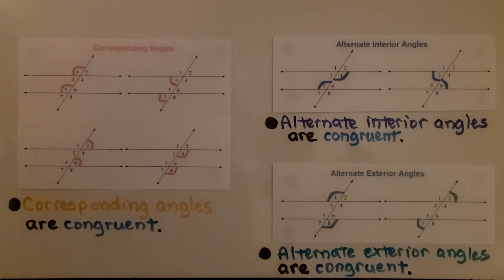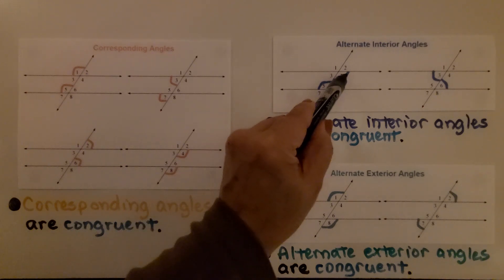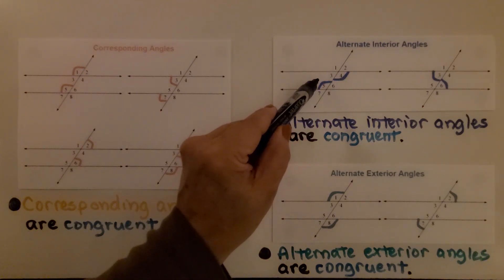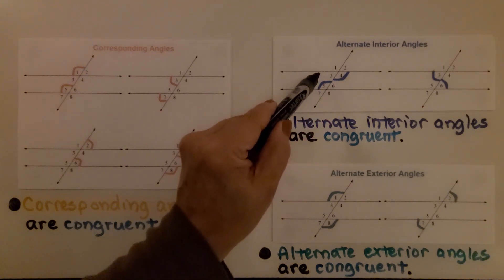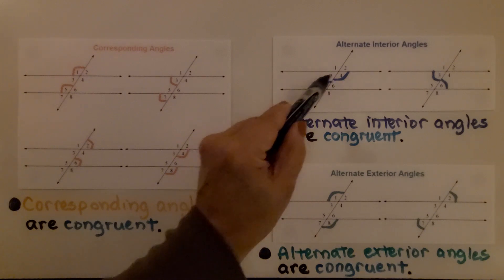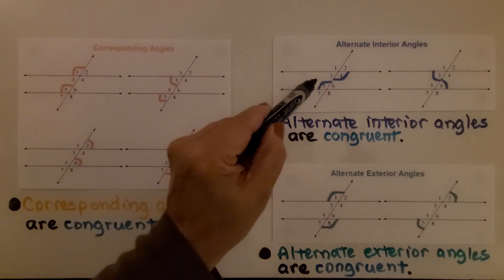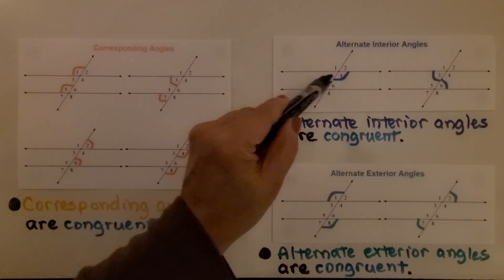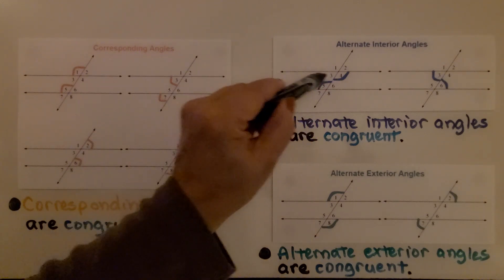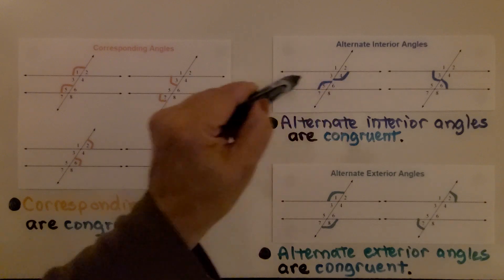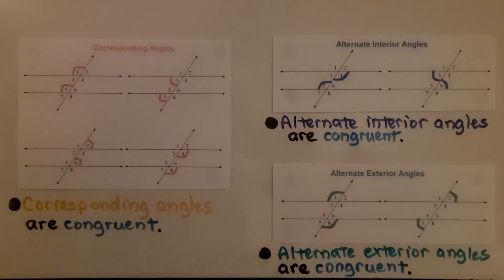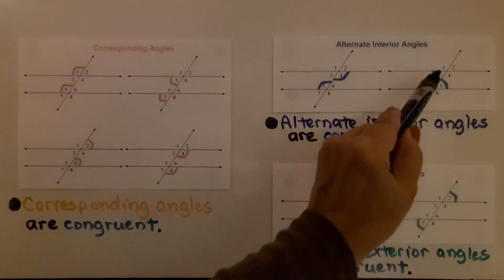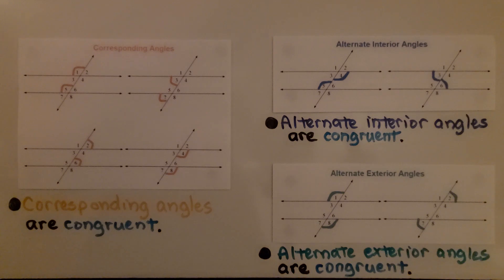Alternate interior angles are congruent. Angle four and angle five are alternate interior angles — they're on opposite sides of the transversal and on the inside of the parallel lines. So are angle three and angle six. If we measured them with a protractor, they would be the same measure.